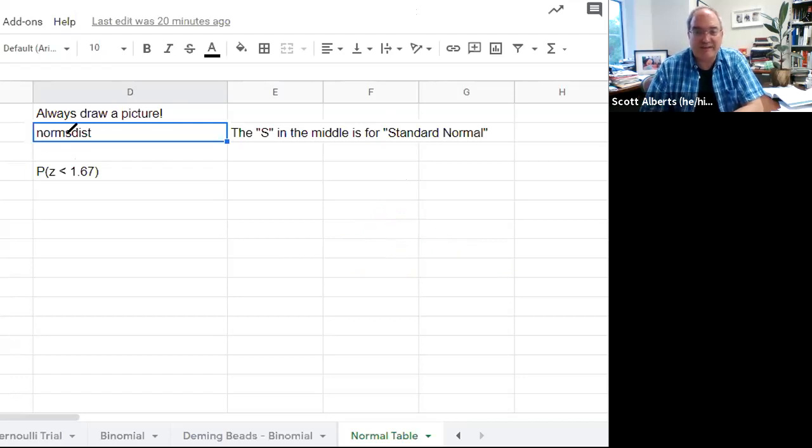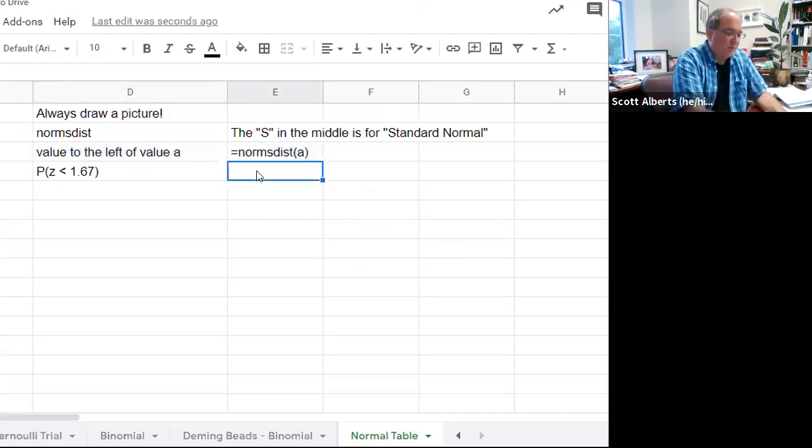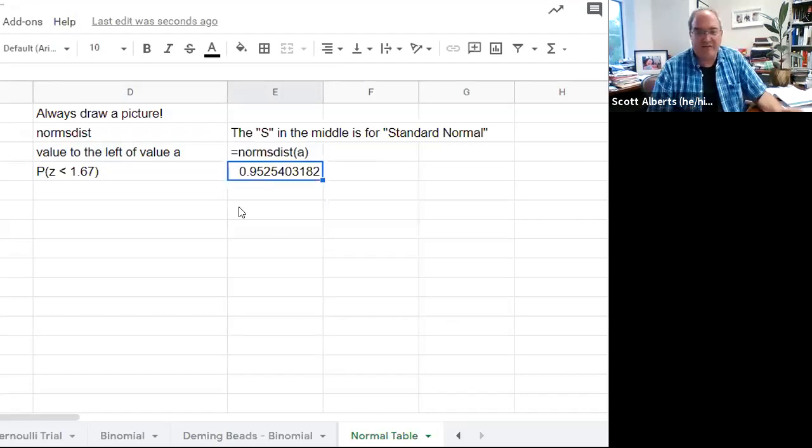The command that we use is called norms.dist. The s in the middle stands for the standard normal distribution. That tells you the mean is zero and the standard deviation is one. If we want to actually get the value to the left of a normal distribution, we use norms.dist of that value. So we put in norms.dist of -1.67 and it gives you 95%. That tells us 95% of the data is below 1.67 standard deviations above the mean.